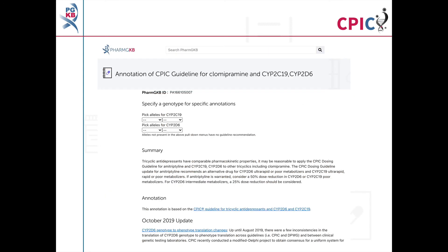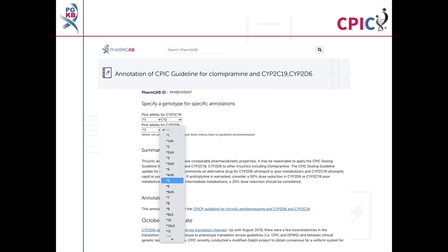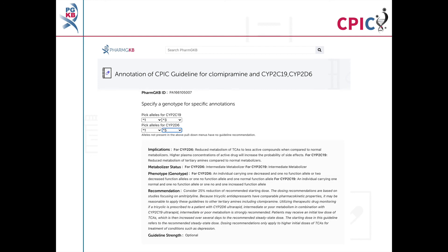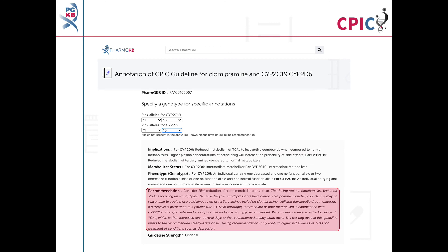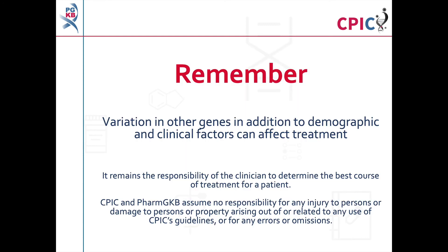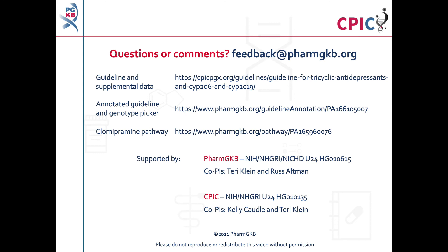This guideline has been annotated on the PharmGKB website, including a drop-down menu where an activity summary can be given for specific combinations of alleles. The activity summary includes implications for the patient's response to clomipramine, the appropriate dosing recommendation for the specific genotype, and the strength of that recommendation. Remember that variation in other genes, as well as demographic and clinical factors including concomitant medications, can affect treatment, and it remains the responsibility of the clinician to determine the best course of treatment. CPIC and PharmGKB assume no responsibility for any injury or damage arising out of any use of CPIC's guideline or for any errors or omissions. The guideline and supplementary information are freely available at the PharmGKB and CPIC websites, accessible via links in the description below this video.